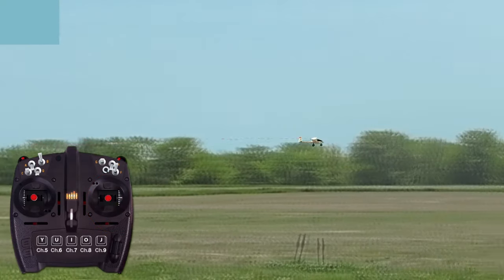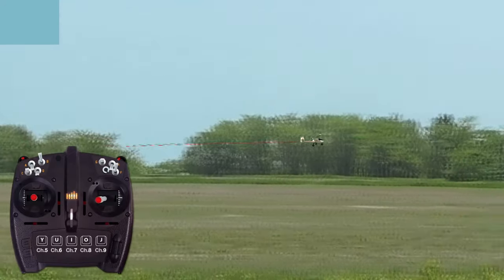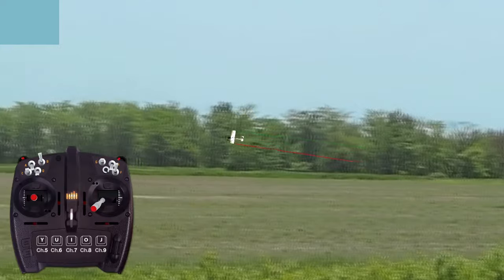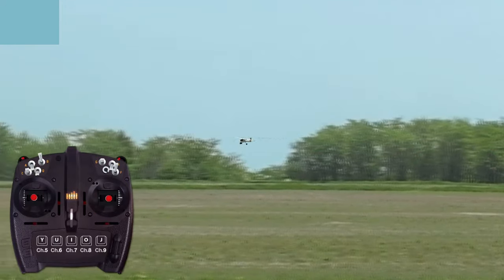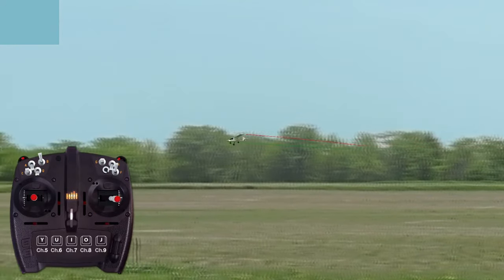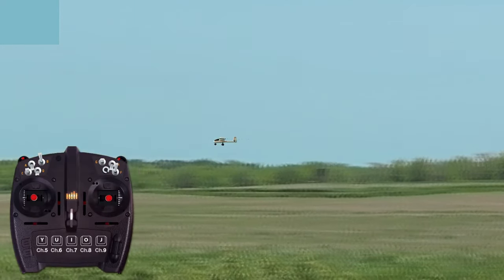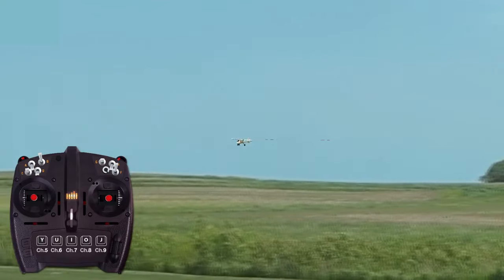To exit a turn, all one needs to do is let the aileron control stick return to neutral, and the plane will automatically return to wings level. Smaller course adjustments are performed by holding in a slight amount of left or right, and steering to the desired heading, then simply neutralizing the control stick when the plane is tracking where you wish.